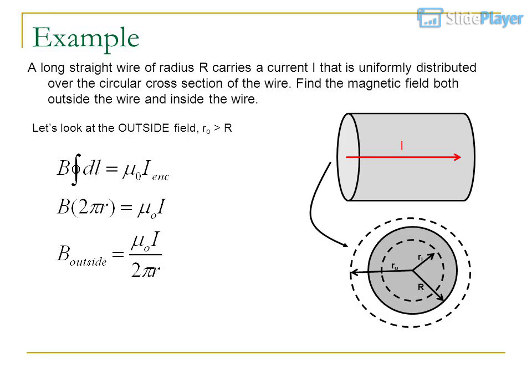A long straight wire of radius R carries a current I that is uniformly distributed over the circular cross section of the wire.